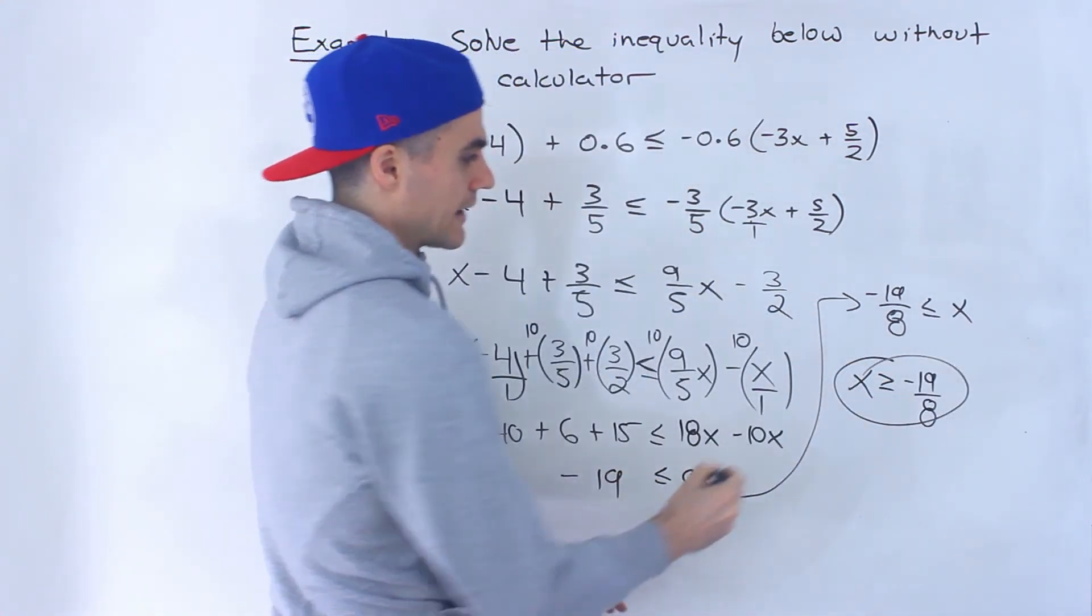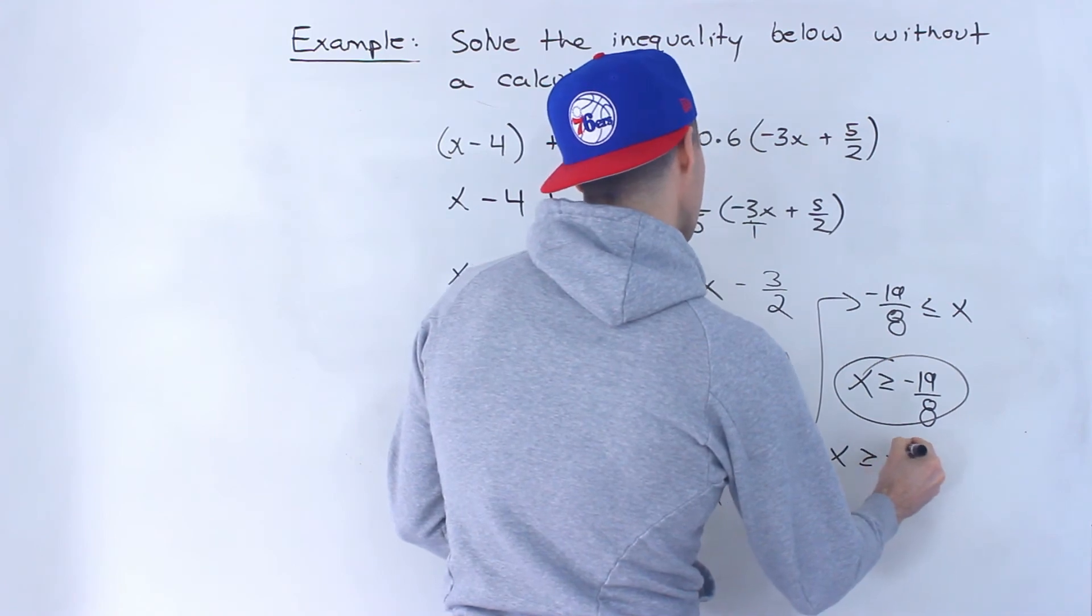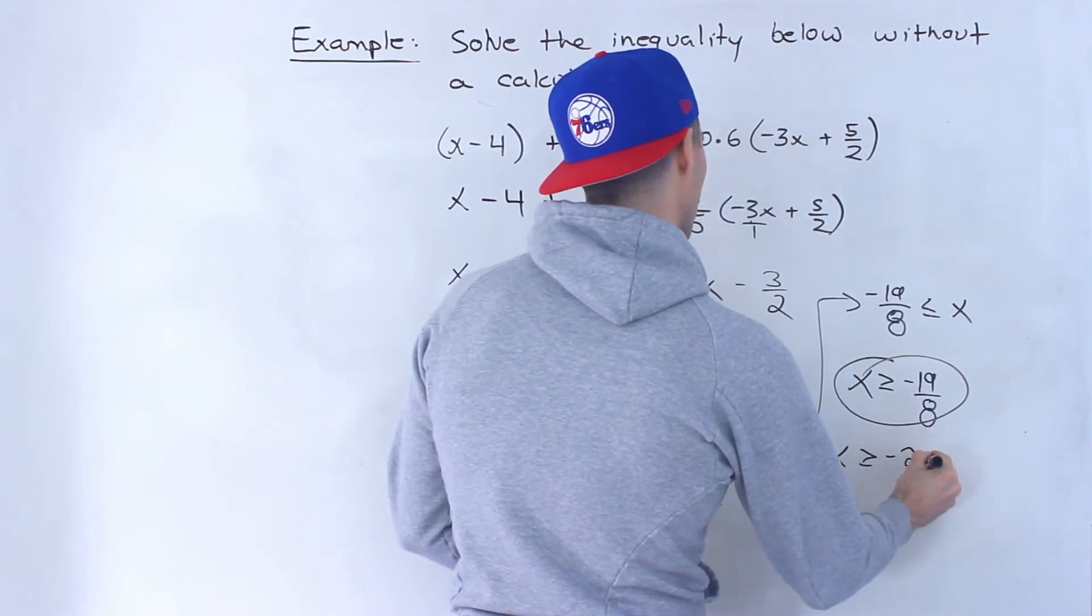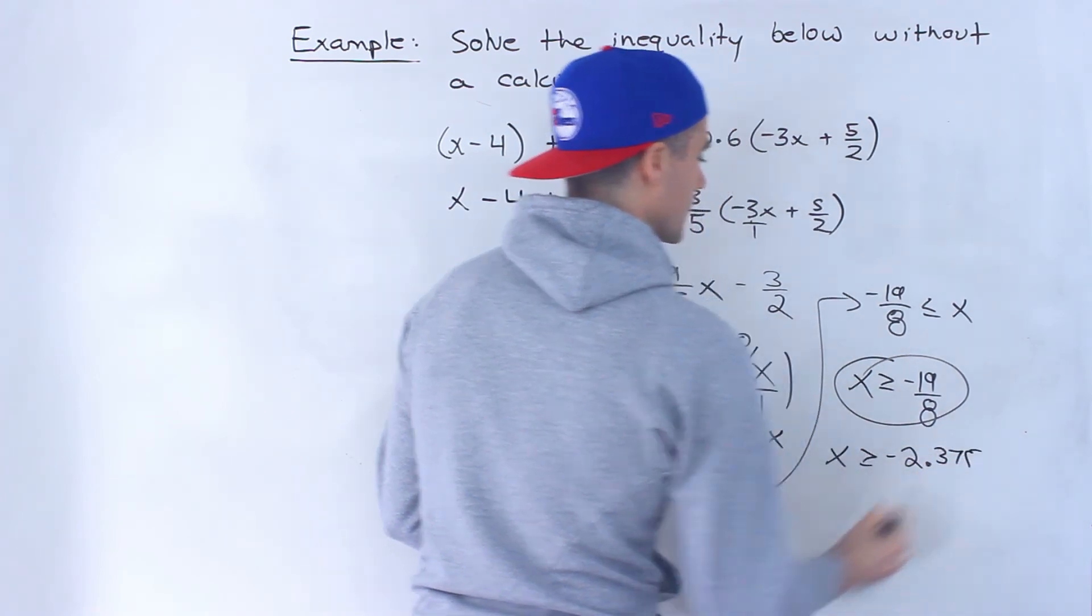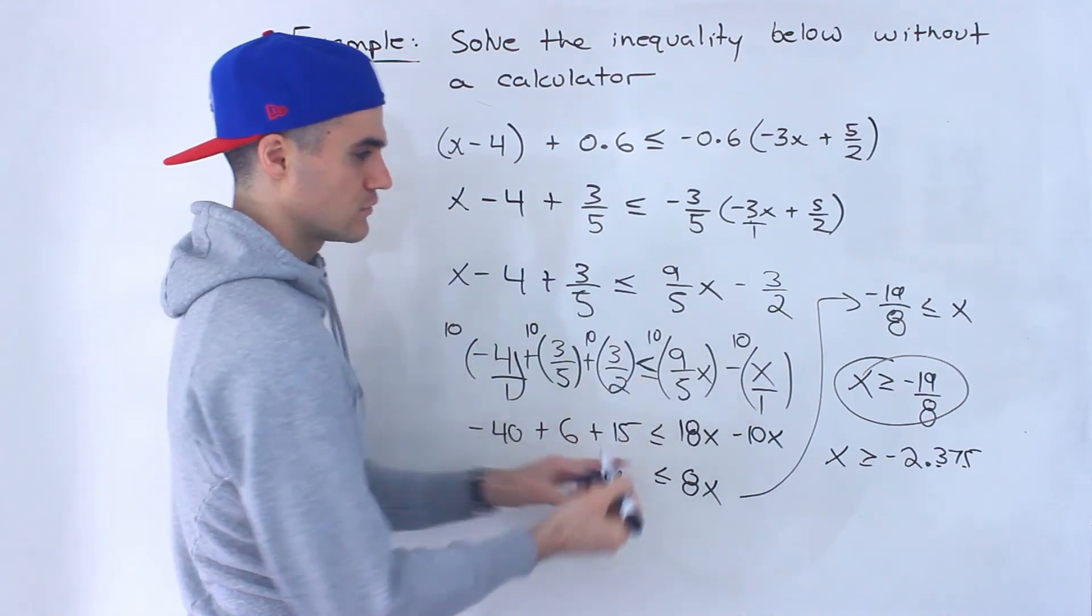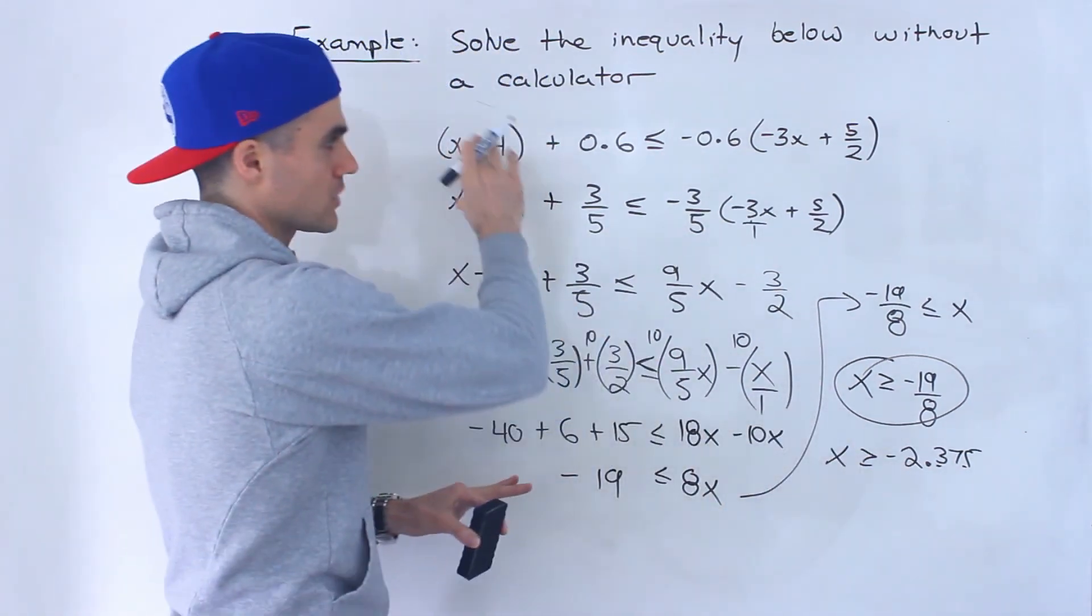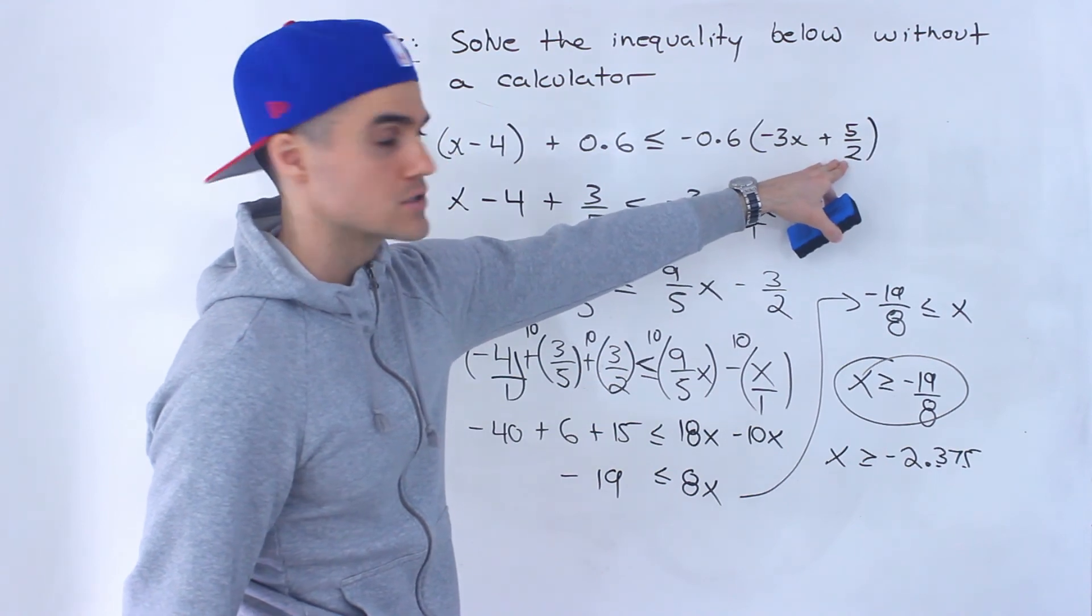Which is like x in decimals. That would be negative 2.3... 8 would be 375. So notice it would be 3 decimals. So just getting that decimal value can be a little tricky. The algebra would be tricky if we took this and converted it to 2.5.